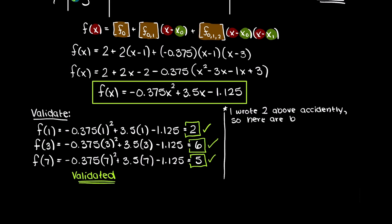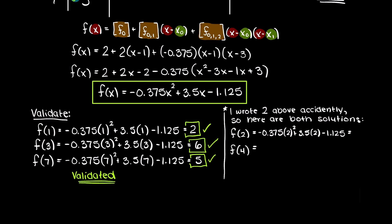Lastly, we are asked to use this interpolating function and solve for an input of 4. Doing so, we are returned 6.875, and that is the answer to this problem.